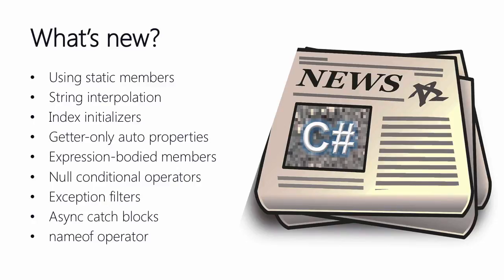Up to now, catching exceptions with previous versions of C# can be a bit tedious. Exception filters will be a great improvement here. And we can finally use async operations in catch blocks. If we want to output the name of the current method or property that we are in, we can use the nameof operator in C# 6.